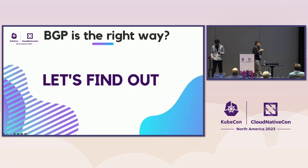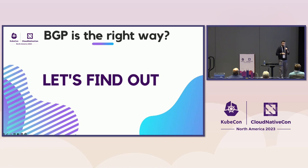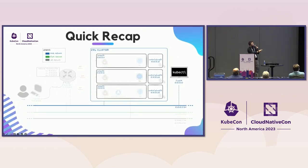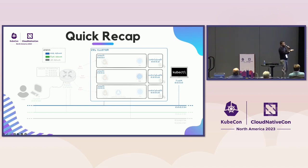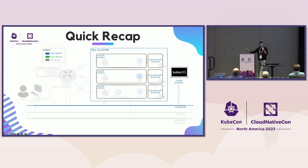So the question now is: is BGP the right way? Let's find out. As a quick recap of where we are: we have a Kubernetes vanilla cluster with three control plane nodes and three worker nodes.